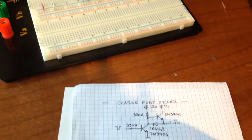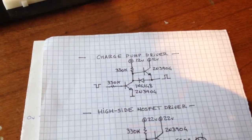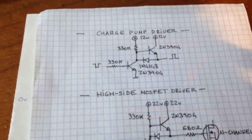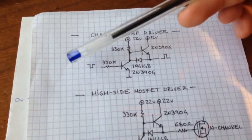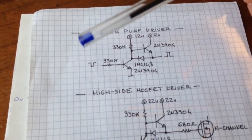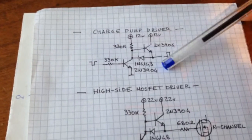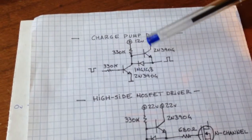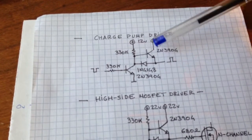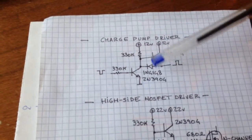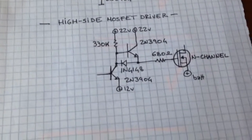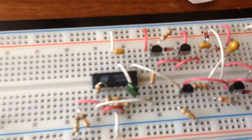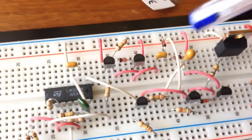We have actually partially already solved this problem in the charge pump driver circuit developed in the last video. We used that circuit to convert a square wave which goes between 0 and 5 volts into a square wave which goes between 0 and 12 volts. What we can do is reconfigure this circuit so that it switches between 12 volts and 22 volts — and that's what I did here. This circuit is exactly the same, but on the output we don't have the charge pump capacitor and the two diodes, which you can see right here.